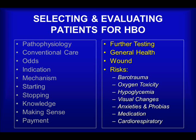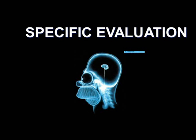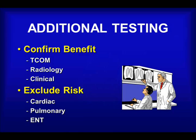When evaluating patients, the following ten things need to be considered: a need for further testing, the general health and nutritional assessment, wound assessment, and the risk assessment, which includes seven items — barotrauma, oxygen toxicity, hyperglycemia, visual changes, anxieties and phobias, medication, and cardiorespiratory status. Let's switch now to the specific evaluations that may be required to ensure benefit and minimize risk in the application of HPO.